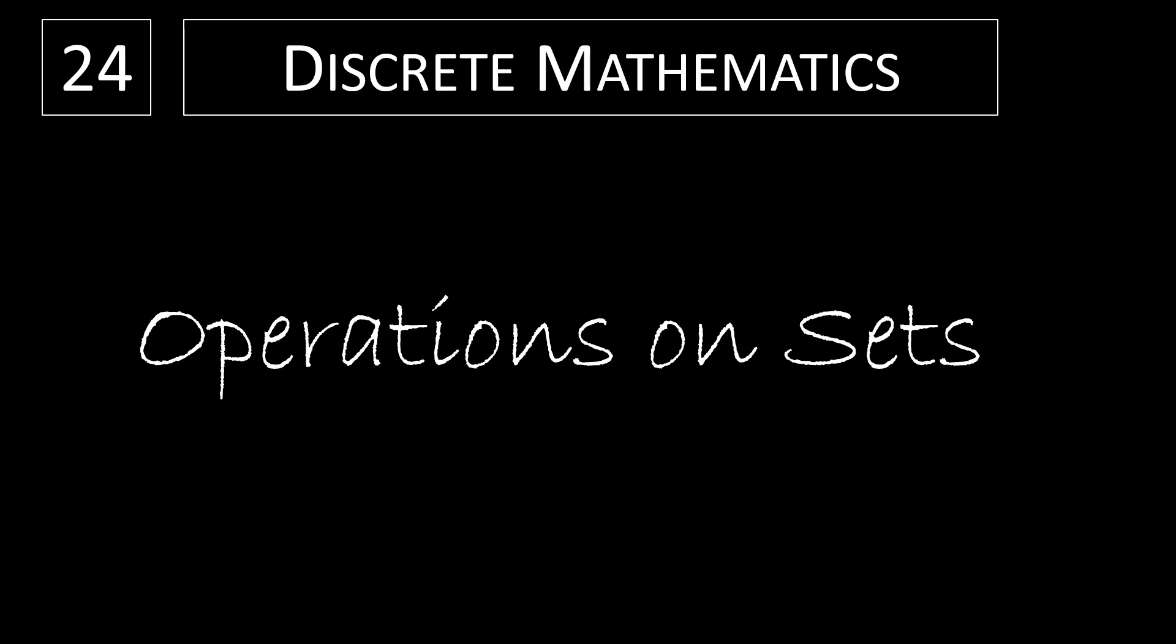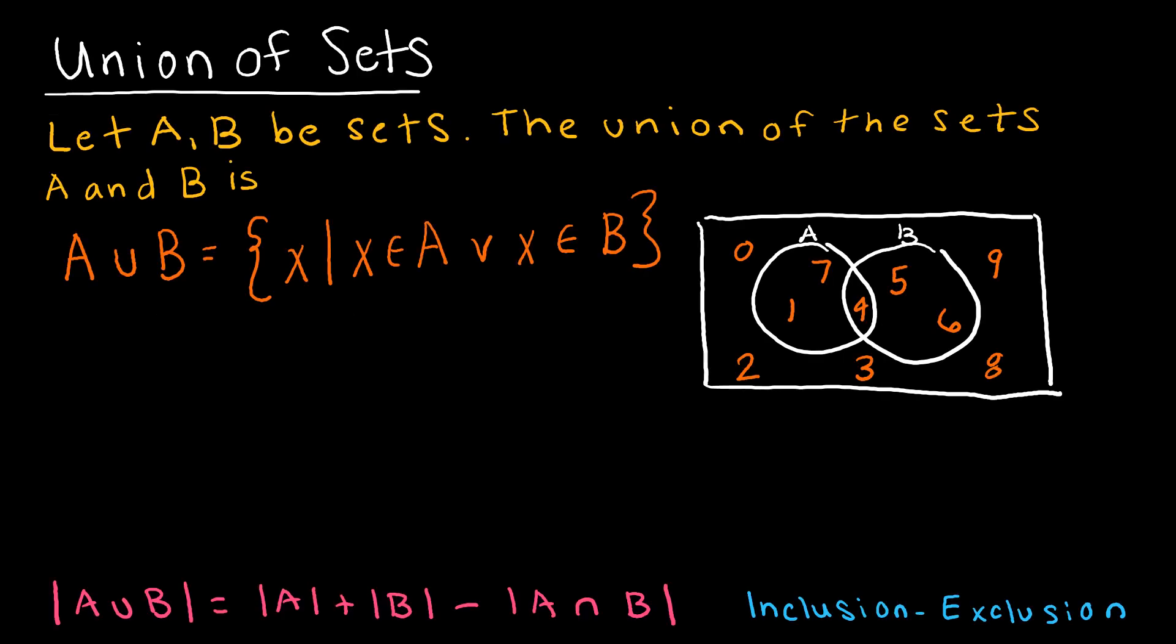In this video, we're going to take a look at some set operations or operations that can be performed on sets. So the union of sets is the first one that we'd like to look at. And the definition of the union of sets is essentially all of the values that are in both A and B.